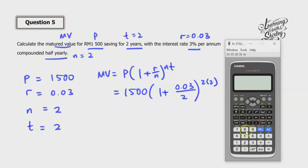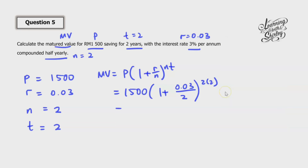We calculate inside the bracket first: 0.03 divided by 2, then plus 1, then to the power of 4, then multiply by 1,500. So we get 1,592.05 RM. And this is the answer.